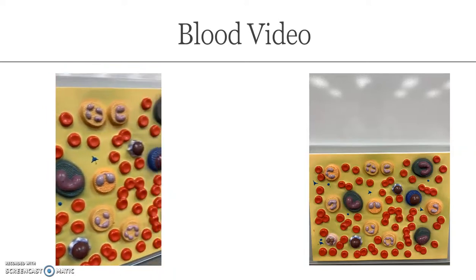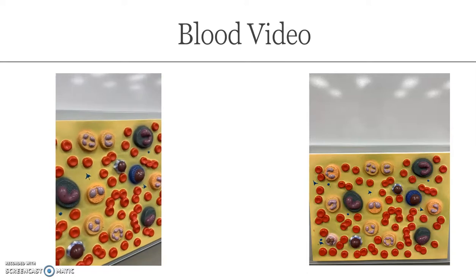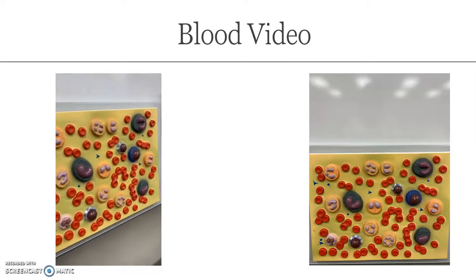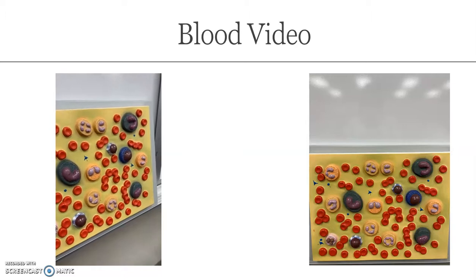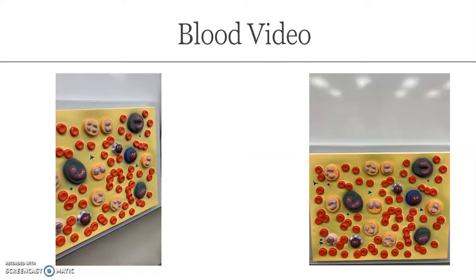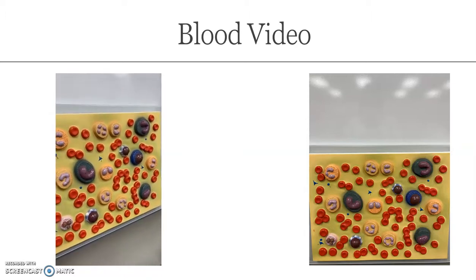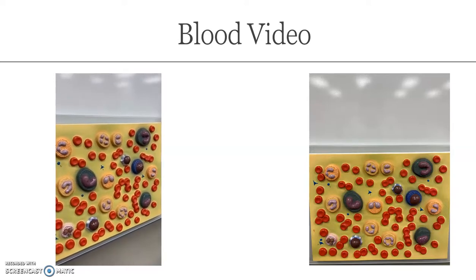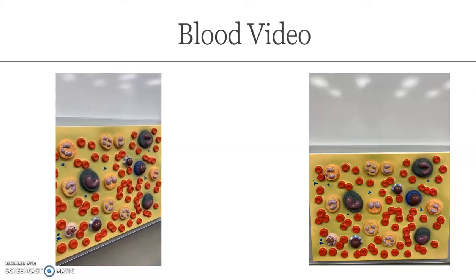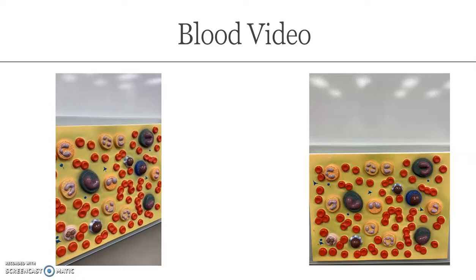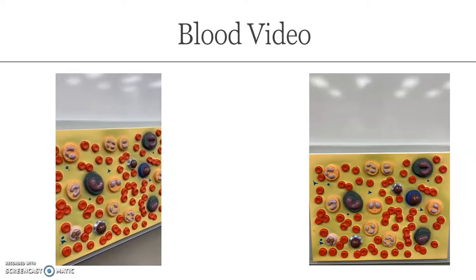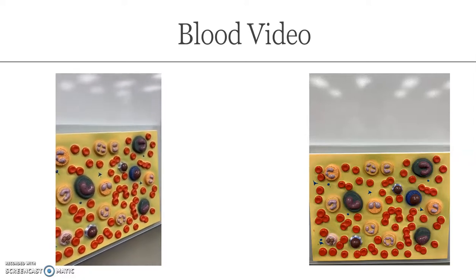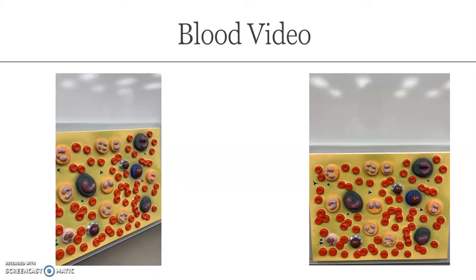And then we have our last type of formed element found within the blood, which will be your white blood cells. Our white blood cells are known as leukocytes — 'leuco' means white, 'cytes' means cells. We have five types of leukocytes, and I am going to present them from their most abundant in the blood to the least abundant.